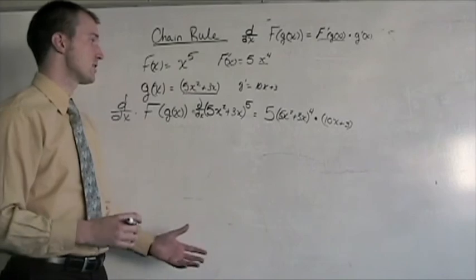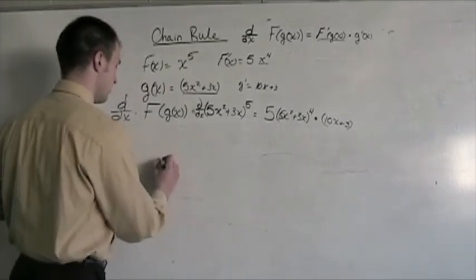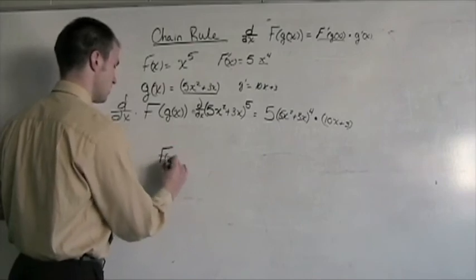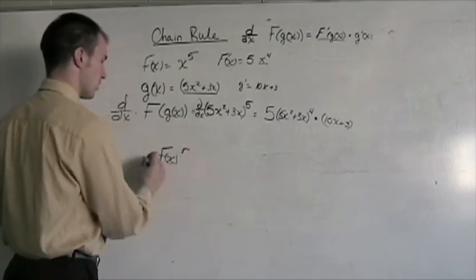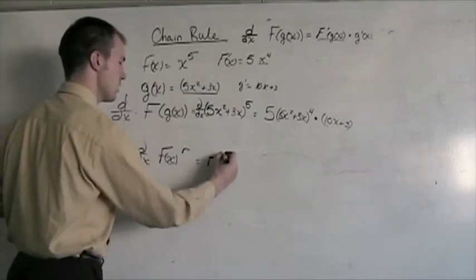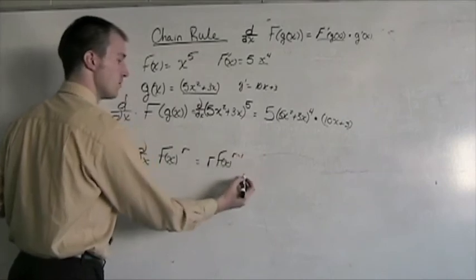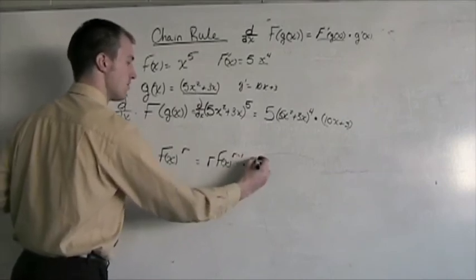You might notice this as the general power rule. Anytime we have f of x to the r power, and we're looking to take derivatives with respect to x, it's going to be r times f of x to the r minus 1 times f prime of x.